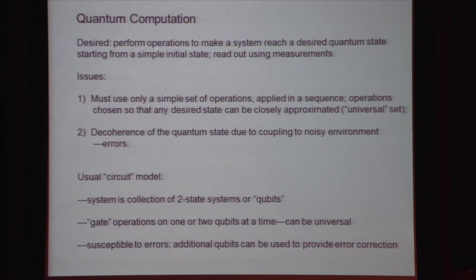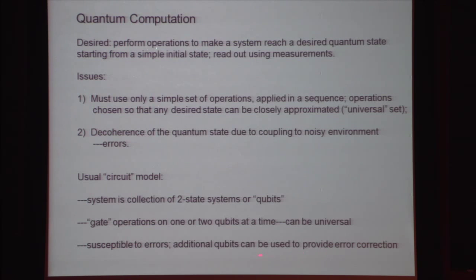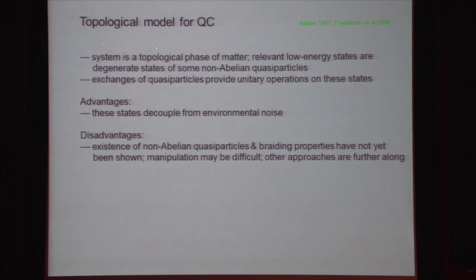In the usual circuit model, the system is a collection of qubits — a tensor product space — and gate operations act on only one or two qubits at a time, which is enough to give a universal set. But this is quite susceptible to errors. In practice we would have to use a large number of additional qubits to provide redundant storage and correct for errors. That's feasible if the error rate is not too big, but it's still a big practical burden.